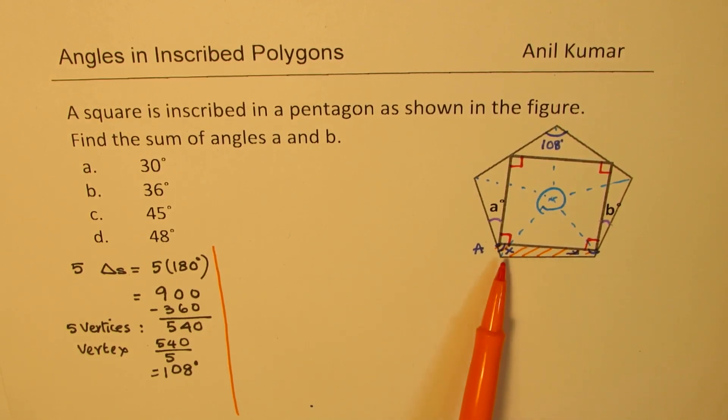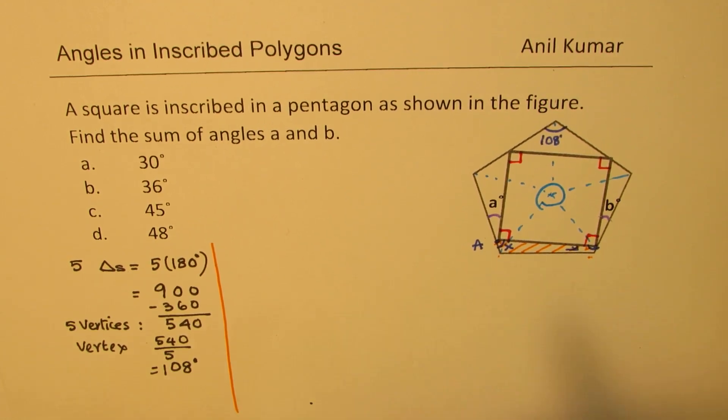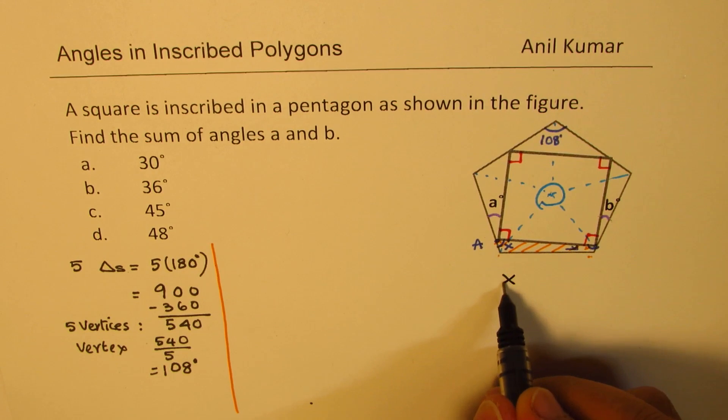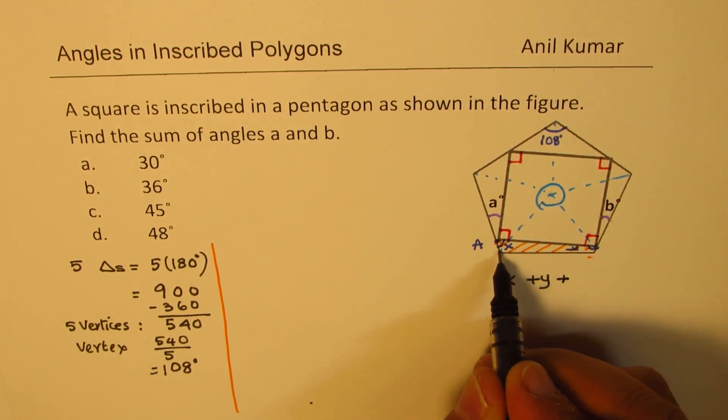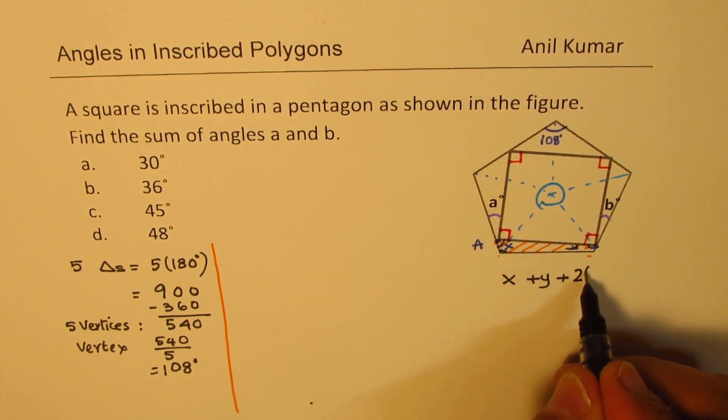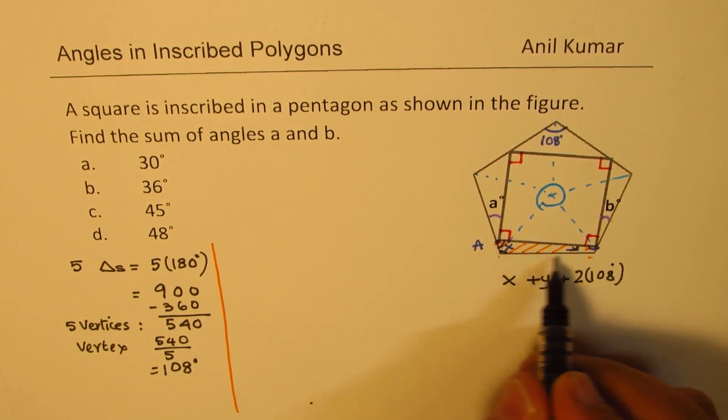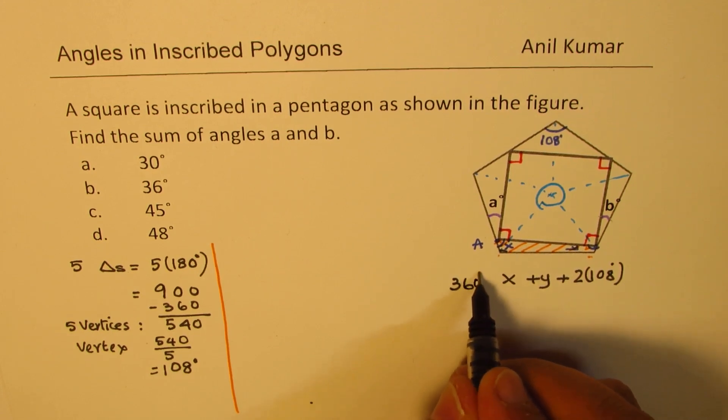So in this quadrilateral, we have X, Y, and those two angles of the pentagon. So if you see that quadrilateral, you can say that X plus Y plus these two angles, which are 108 degrees—so which is 2 times 108 degrees—is equal to sum of all the angles in a quadrilateral, which is 360 degrees.